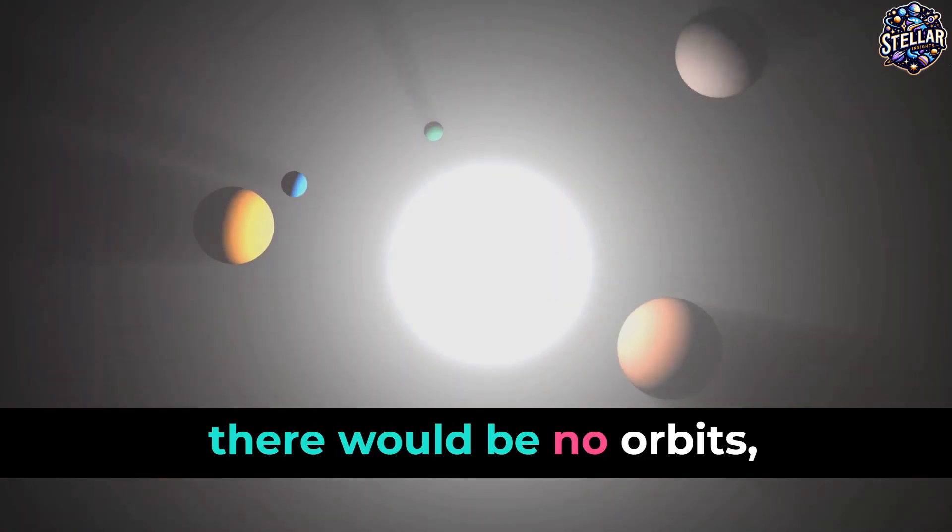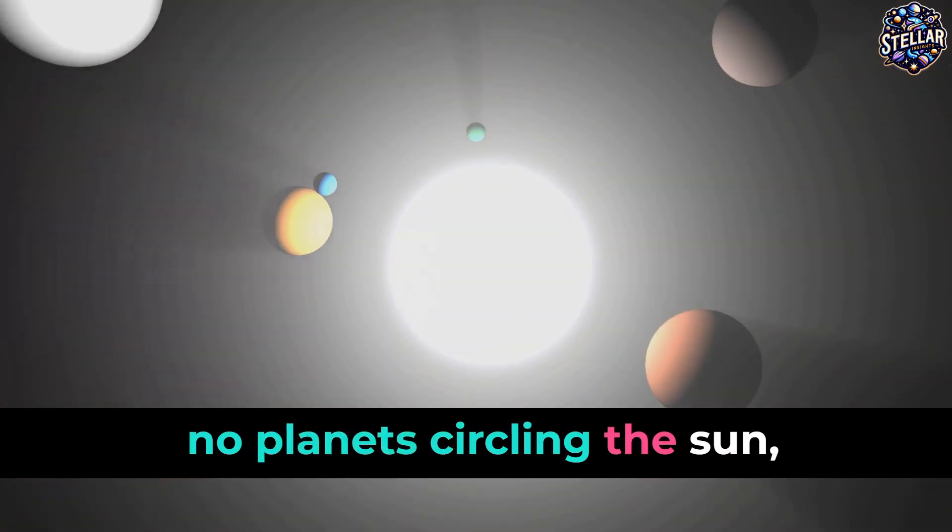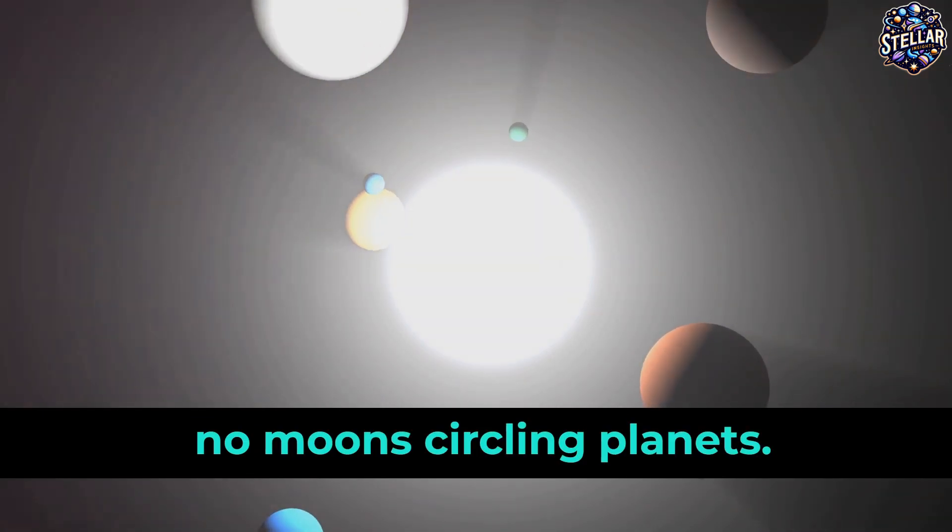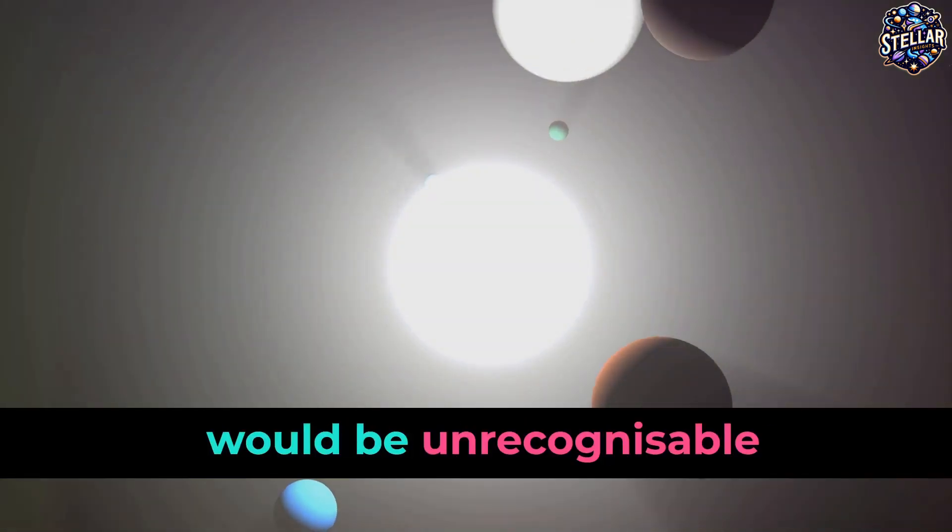All of this is orchestrated by gravity. Without gravity, there would be no orbits, no planets circling the sun, no moons circling planets. The universe as we know it would be unrecognizable.